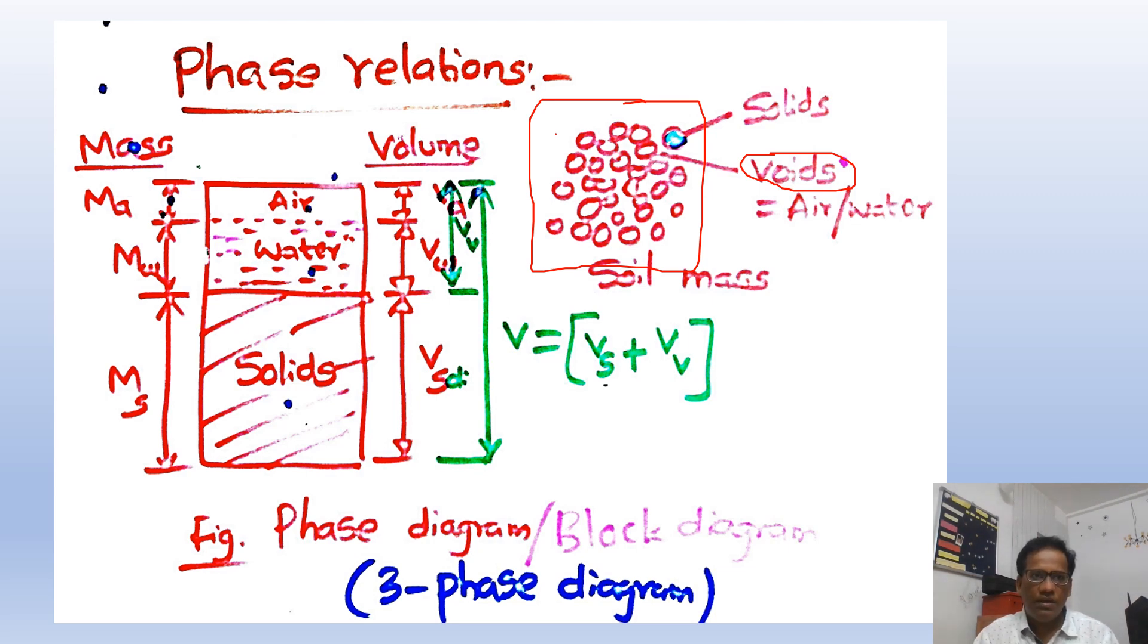Now the same three components we are seeing here are shown in a diagram. In this figure we are showing a diagram which represents these three components: first one is solids at the bottom, then followed by water and air. This is an imaginary diagram of the soil mass.